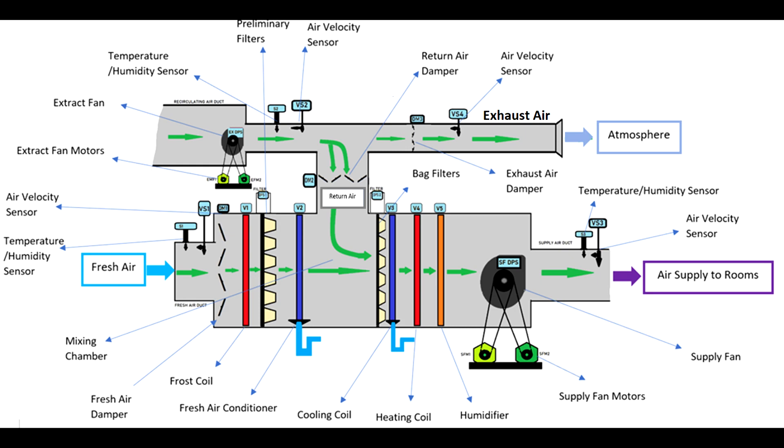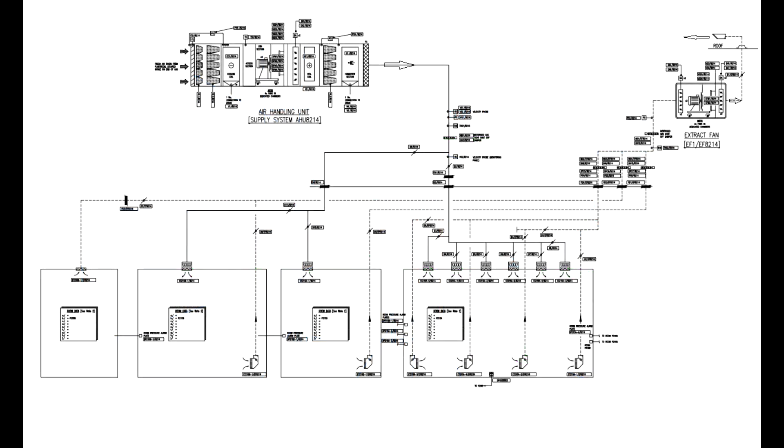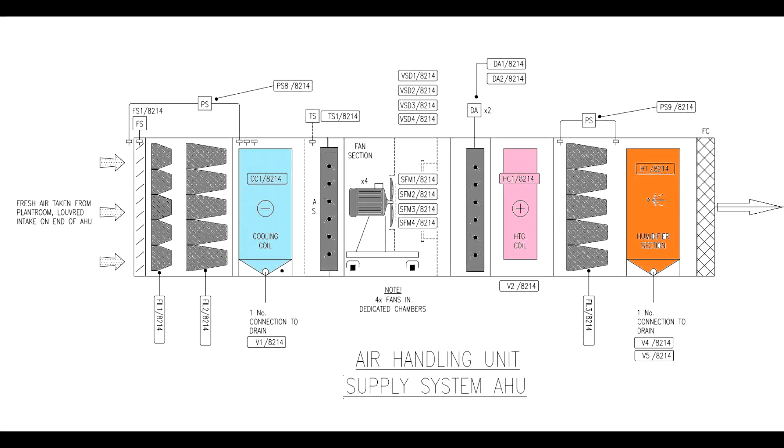Unlike that one, this type of AHU air handling unit is the one that brings only fresh air from outside and extracts exhaust. That air is not recirculated. This type of arrangement makes it harder for the air temperature and humidity to be controlled.